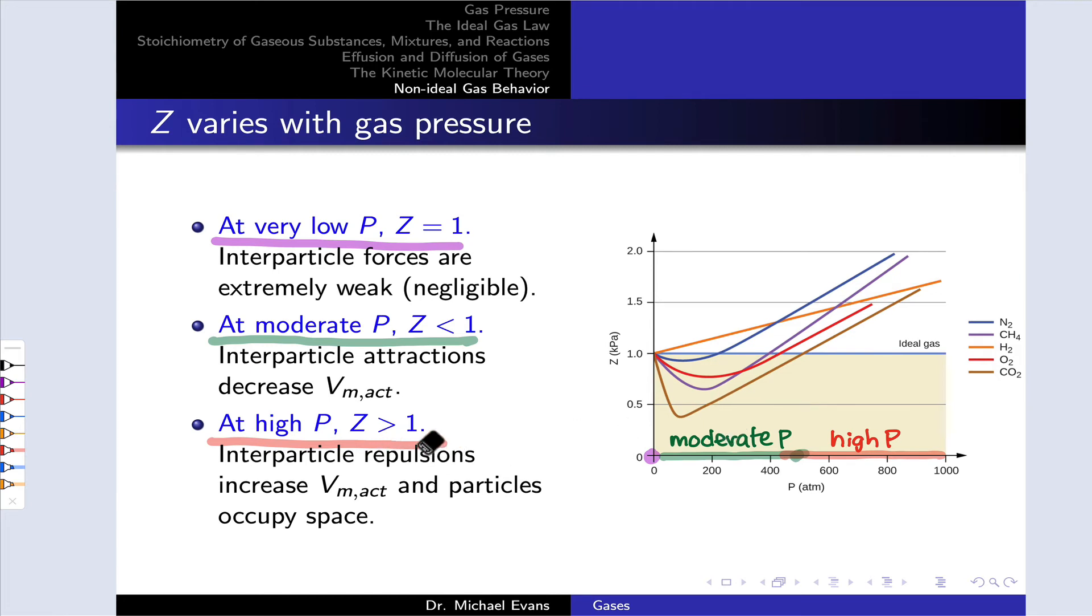At some point, at high pressure and high concentration, the gas particles get so close to one another that they start to repel, their electron clouds start to repel one another. And these interparticle repulsions increase the molar volume and push Z above one. So this shows you the pressure dependence of the compressibility factor.